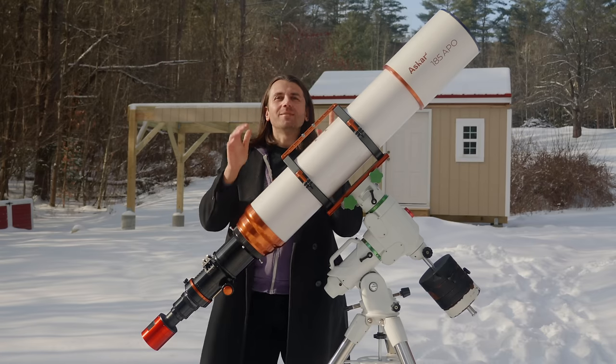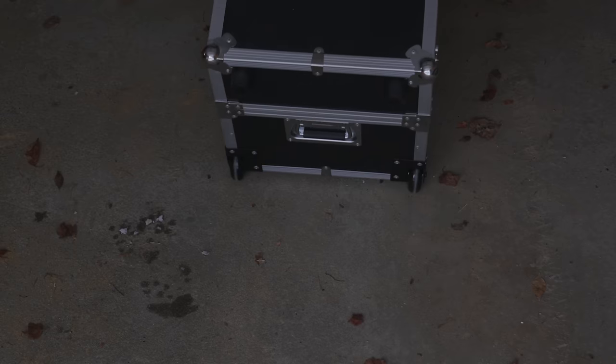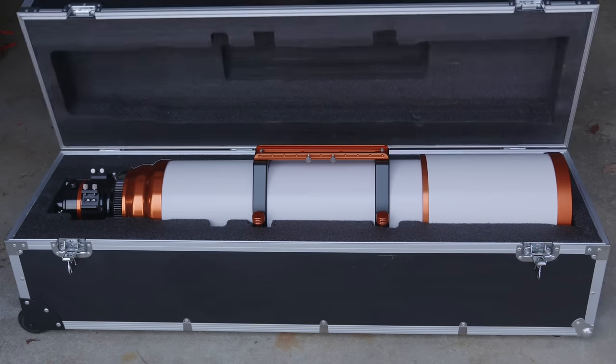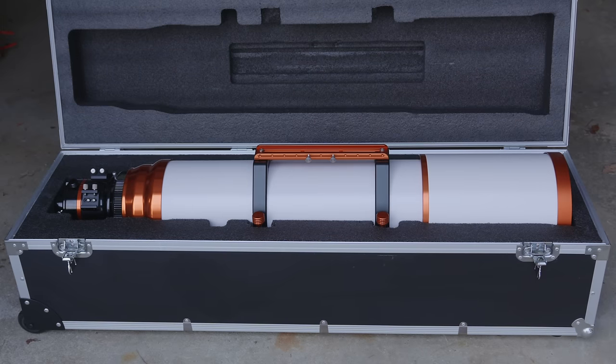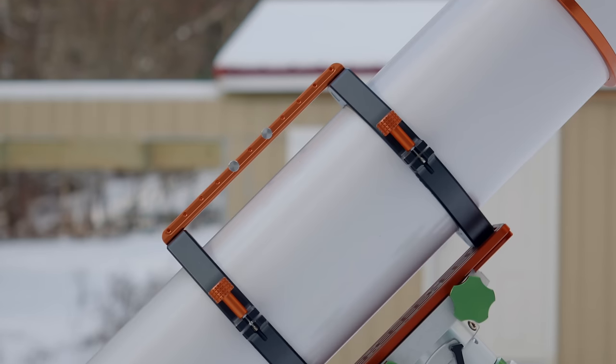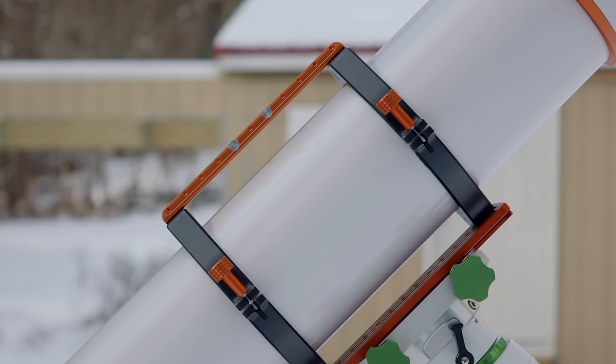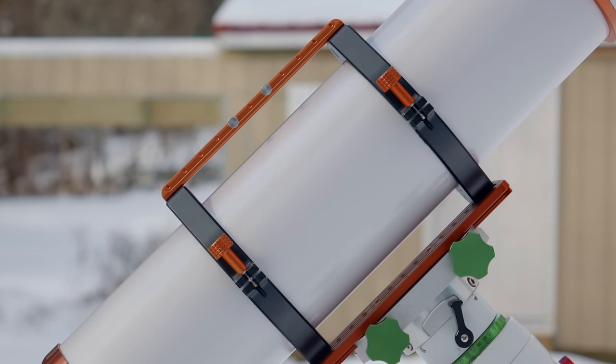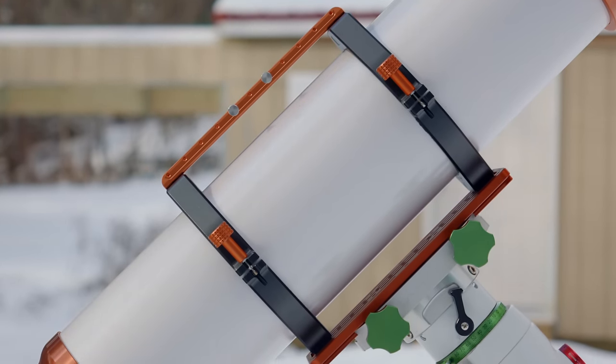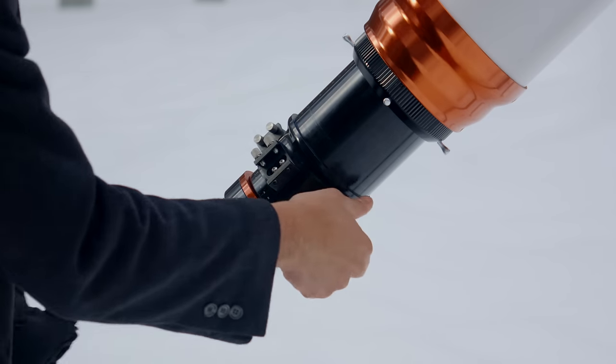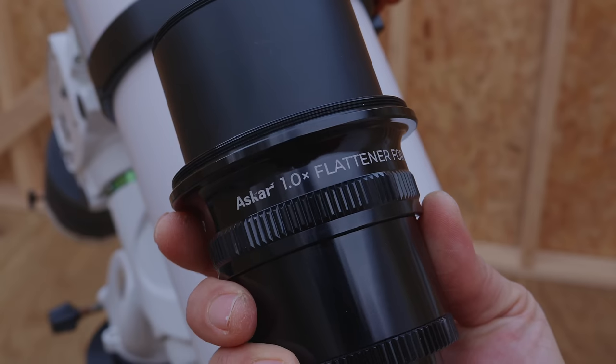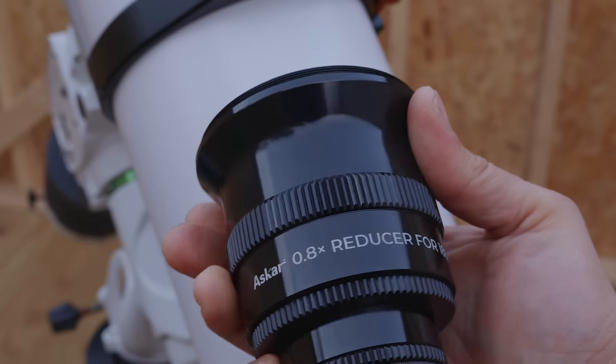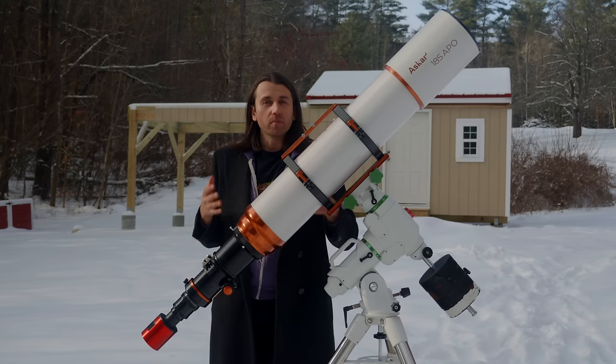Back to the 185, it comes packaged with a hard sided case with wheels on the outside and custom cut foam on the inside. It also comes with a top handle, very nice machined rings and a substantial 400 millimeter Losmandy plate. The focuser is a three and a half inch rack and pinion style focuser.